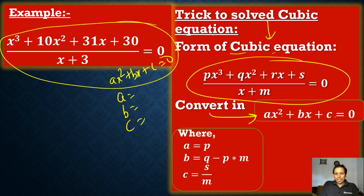This is the example. Where a equals p. So for this equation, what is p? p equals 1 here. If you use the traditional method, it will take more than 1 minute. But it is hardly, it will take 15 to 20 seconds. a equals 1.